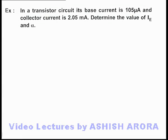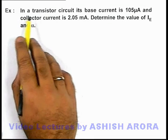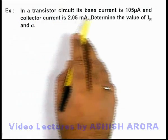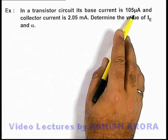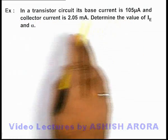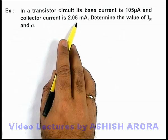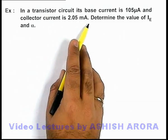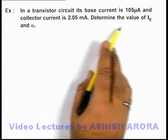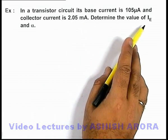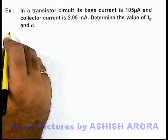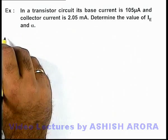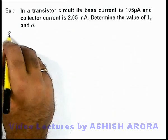In this example, we are given that in a transistor circuit its base current is one hundred and five micro ampere and collector current is two point zero five milli ampere. We are required to determine the value of emitter current and the current gain alpha.